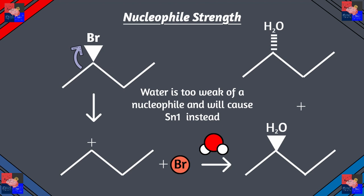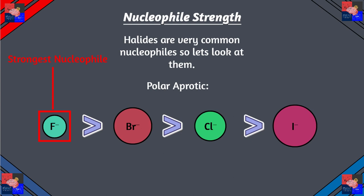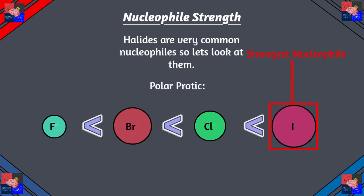Halides are very common nucleophiles, so let's also look at those. In a polar aprotic solvent — basically a solvent that doesn't have protons available for dipole-dipole interactions — fluoride is the best halide ion nucleophile. The reverse is true for polar protic solvents. The reason is that as we go down the periodic table, the atoms get larger and can spread out their negative charge more, making them stronger nucleophiles.